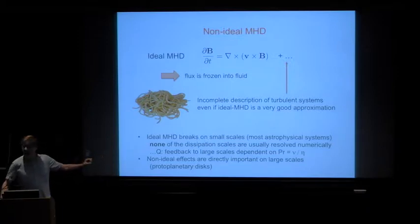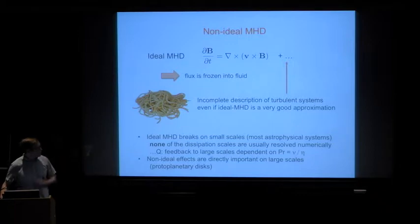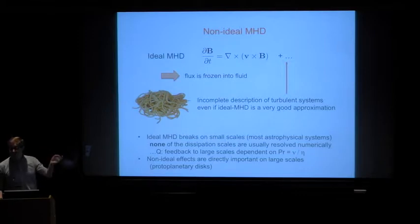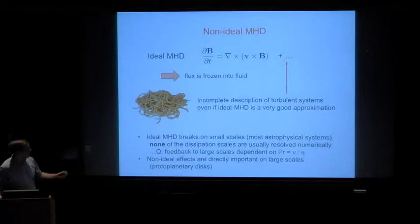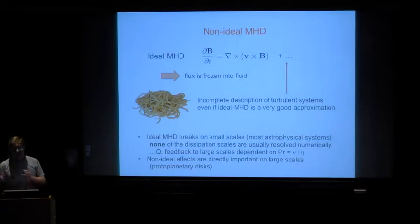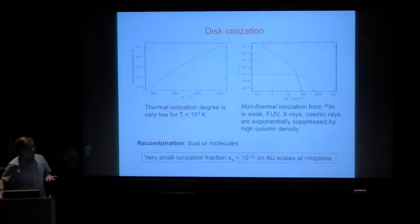There are interesting questions related to whether the small scales feed back on the large scales. For example, what's the ratio of the viscosity to the resistivity — the so-called Prandtl number — and does going to different regimes of that actually affect the large scales of the flow as well as the small scales? However, when we get to protoplanetary disks, we're dealing with a different situation because the extra terms on the right-hand side are not just things that matter on small scales — they're actually things that matter on large scales. That's the unusual aspect of protoplanetary disks: non-ideal MHD terms are actually large in magnitude in many circumstances.